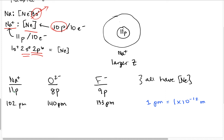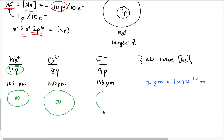Looking at these three ions, sodium has the most protons and so it pulls its 2s and 2p electrons in more strongly than oxygen, which only has 8 protons. Fluoride is just a little bit smaller than oxide because it only has 9 protons — just a little bit more than oxygen. So the size of our ions is going to be affected by the nuclear charge and by the effective nuclear charge.